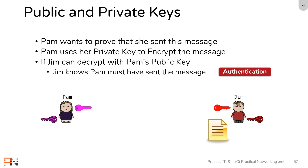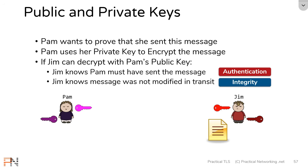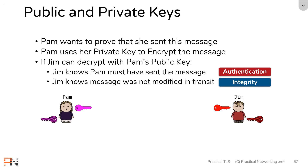If Jim can decrypt the message successfully with Pam's public key, this actually proves two things. First, it proves that Pam must have sent that message — this gives us authentication. If Jim was able to decrypt something with Pam's public key, it proves the only key that could have encrypted it was Pam's private key, and Pam should be the only person with that key. It also proves the message was not modified in transit — that is integrity. If someone had changed the content mid-transit, Jim would end up with a garbled mess when trying to decrypt it.